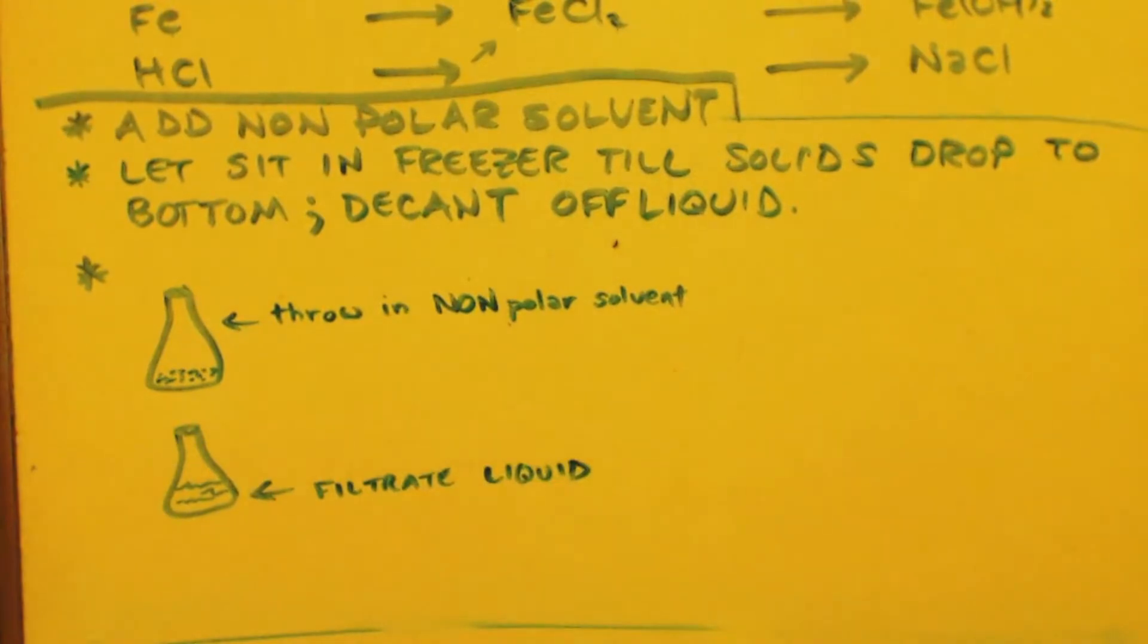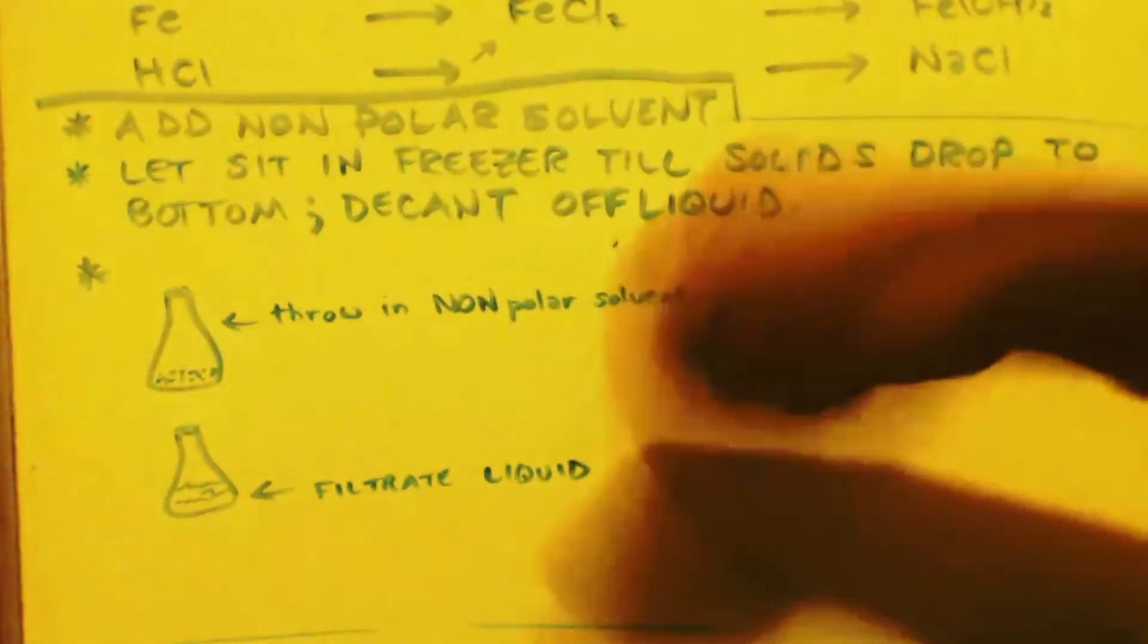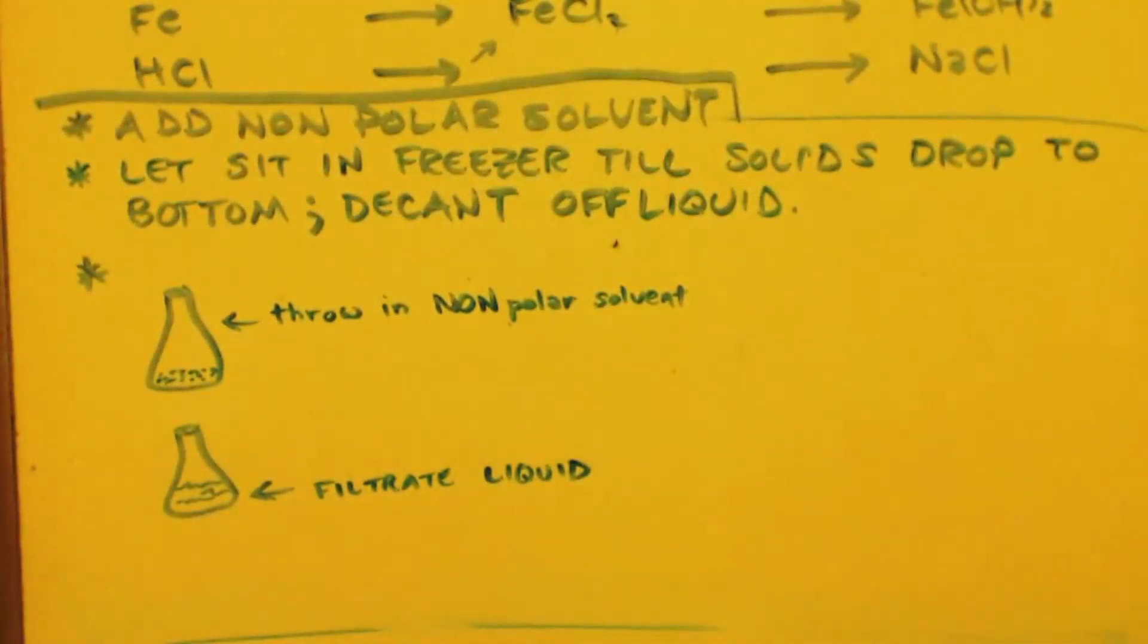Put some more non-polar solvent in there. Grab it and shake it up, shake it up good. Cover it back up, put it in the freezer. Repeat that process like three or four times.